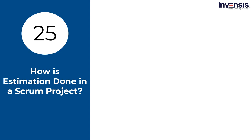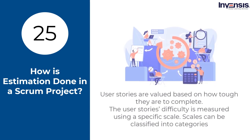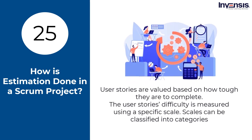How is estimation done in a Scrum project? Estimation is done to consider user stories for the sprint, by priority and by the ability of the team to deliver during the sprint. User stories are valued based on how tough they are to complete, measured using a certain scale. Scales can be classified into categories — for example, sizing by numeric values such as 1 to 10 or the Fibonacci sequence.